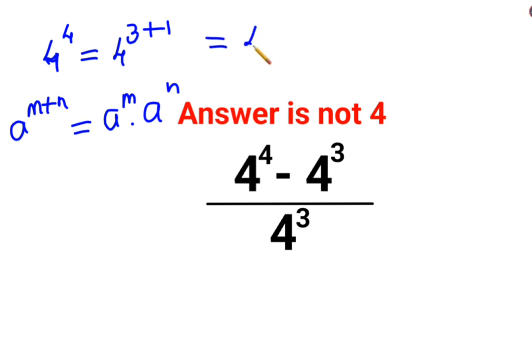So this can be written as 4 raised to 3 multiplied into 4 raised to 1. So instead of 4 raised to 4, let's write it as 4 raised to 3 multiplied by 4 minus 4 raised to 3 upon 4 raised to 3. What we can do is 4 raised to 3 is common.